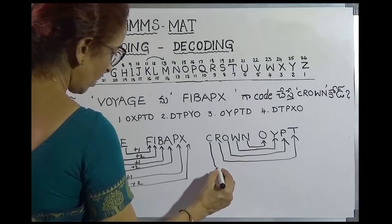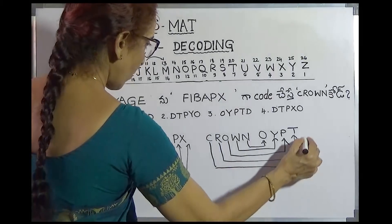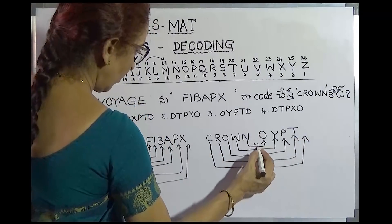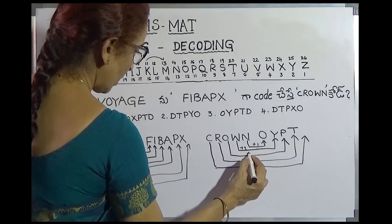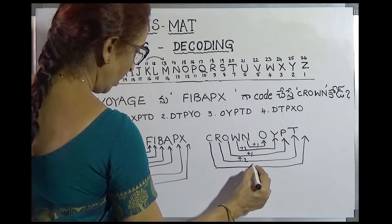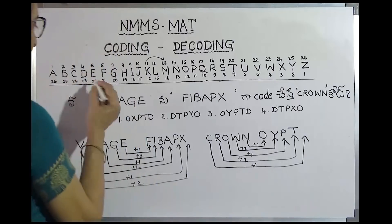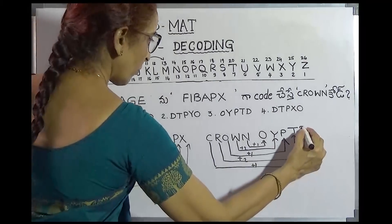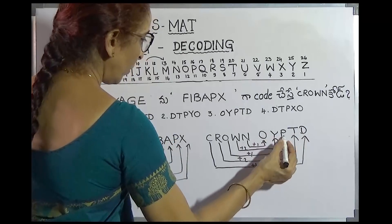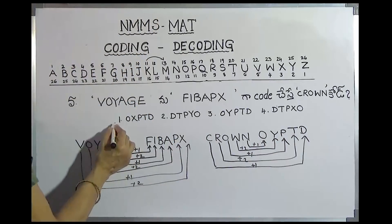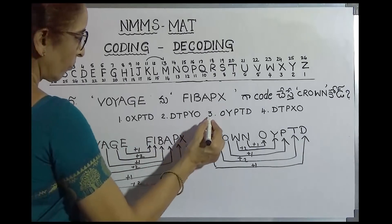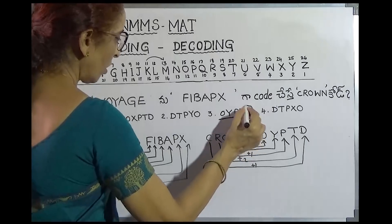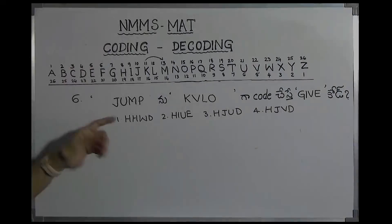Now let's see the letters. C is plus 1. This is plus 1, this is plus 2, this is plus 1. This is plus 1. Now C is plus 3. Plus 1 means 4 — D. This is O, Y, P, T, D. This is O, Y, P, T, D. This is plus 1. This is plus 1.